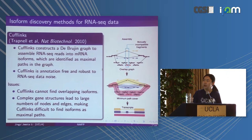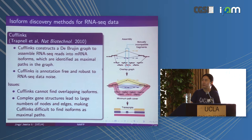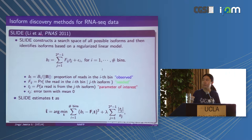However, Cufflinks cannot find overlapping isoforms. For example, if there is an isoform containing only the first and second exons that is a subset of a longer isoform, Cufflinks can only discover the longer one. Additionally, for genes with complex structure — some human genes can have more than 10 or 20 possible isoforms — the graph becomes very dense with many edges, making the maximal path problem difficult to solve.